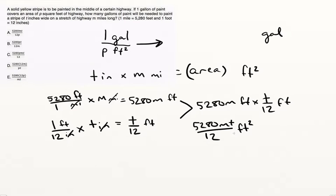So we see that we can just multiply this feet squared times gallon over feet squared. So we get one over p, one gallon per p feet squared times our unit in feet squared. So 5,280 m t over 12 feet squared. And that's going to give us something in gallons because the feet squared cancels the feet squared. So we've already got one gallon per p feet squared, and we've got an answer in feet squared. So actually all we have to do in this case is multiply.